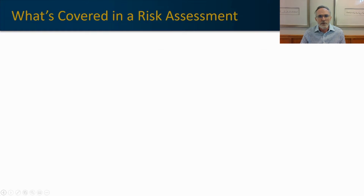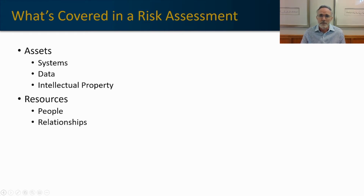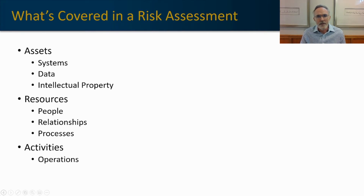From a coverage perspective, we look at the assets of the organization — what systems do we have, what data are we storing, and what intellectual property are we trying to protect? From a resources perspective, we have to assess people first, and then our relationships — primarily partner or customer relationships and how they affect our security posture. Then, what are the processes that we have internally that both make us more secure and sometimes compromise security? And lastly, what are the activities we're trying to protect? This is essentially the operations of the organization — how do we keep operations functional while also keeping them safe?